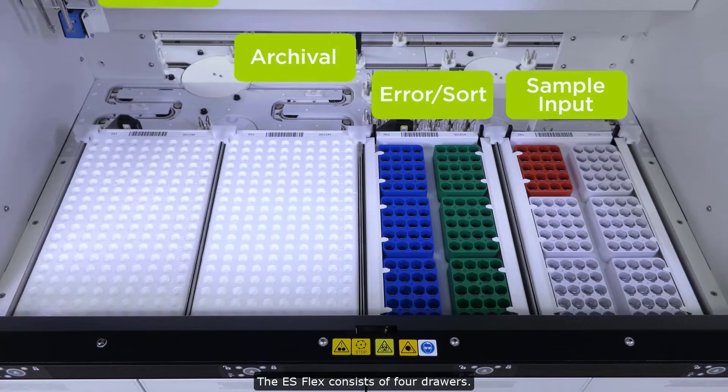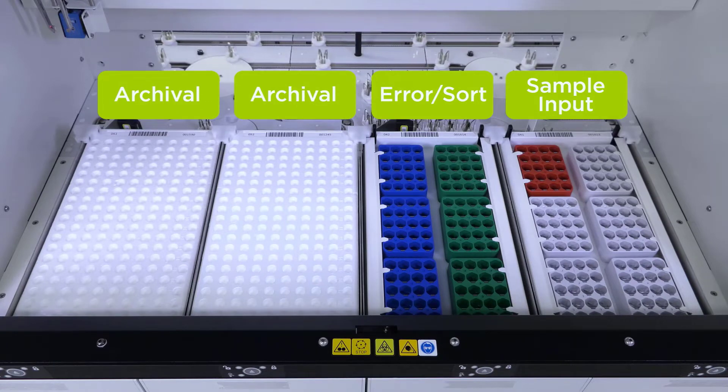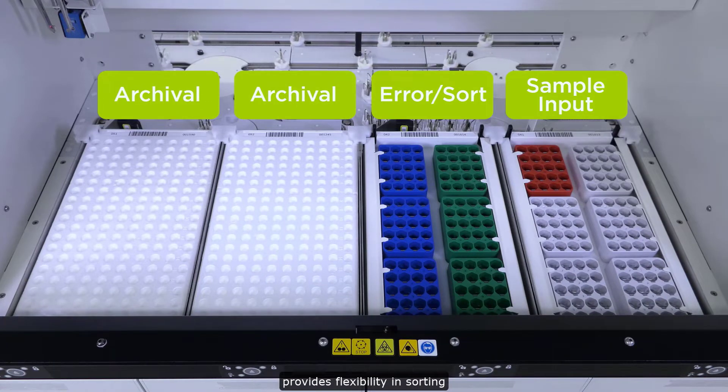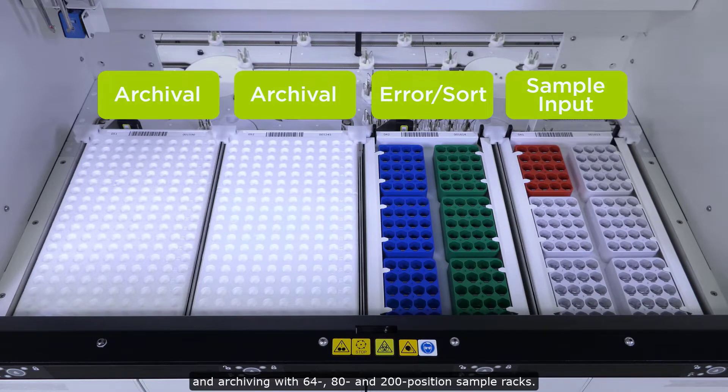The ESFlex consists of four drawers. A combination of racks and trays provides flexibility in sorting and archiving with 64, 80, and 200 position sample racks.